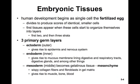In between these two layers you'll find the mesoderm, which means 'middle.' It becomes a gelatinous tissue called mesenchyme, which has wispy collagen fibers and fibroblasts in a gel matrix. This will eventually give rise to muscle, bone, and blood. Think of it this way: your body has a tube from mouth to anus and skin on the outside. Anything close to the outside derives from ectoderm; the gut tube arises from endoderm; and muscles and bones in between arise from mesoderm.